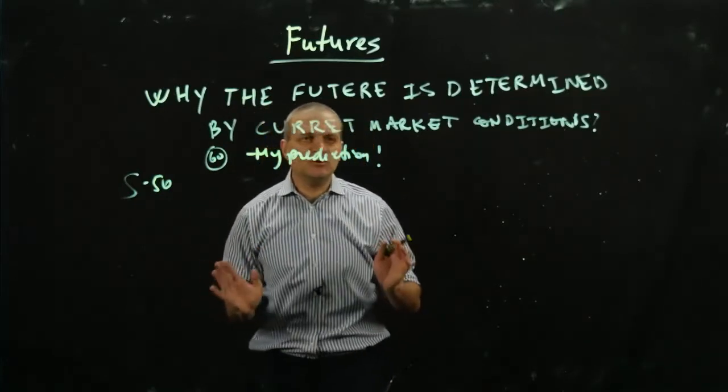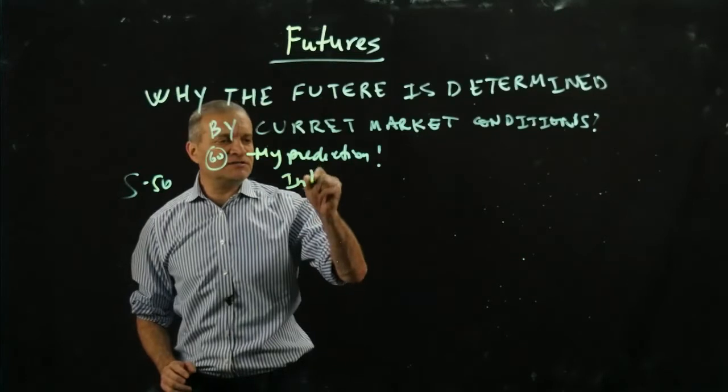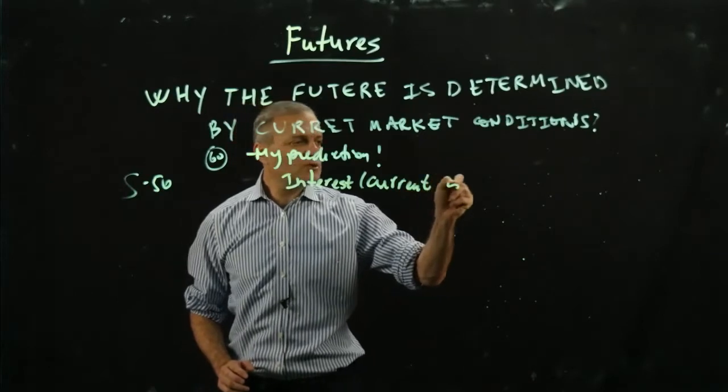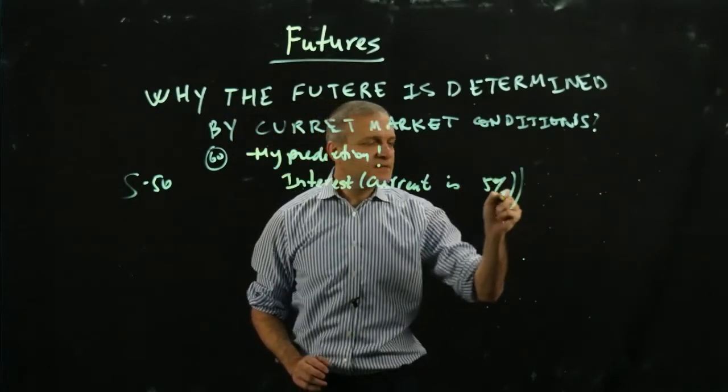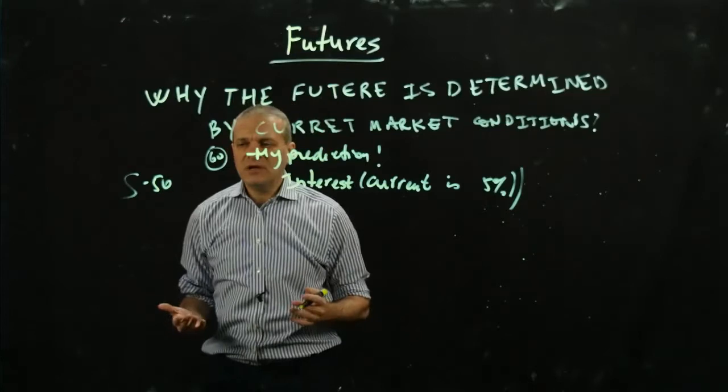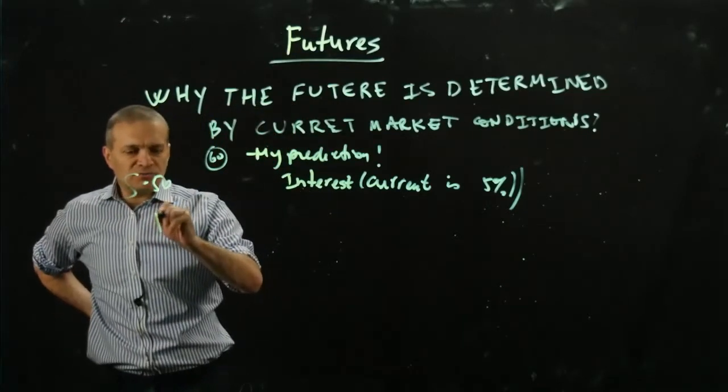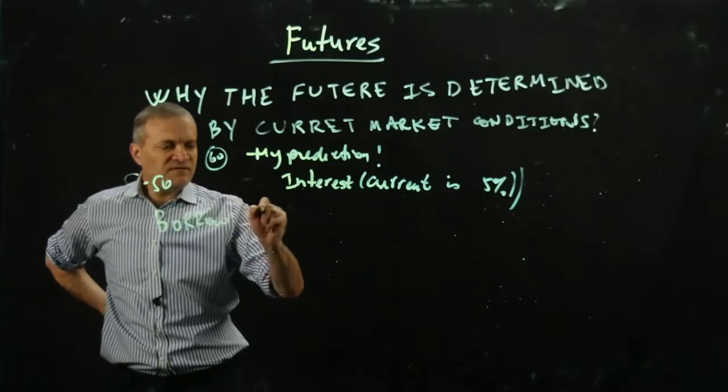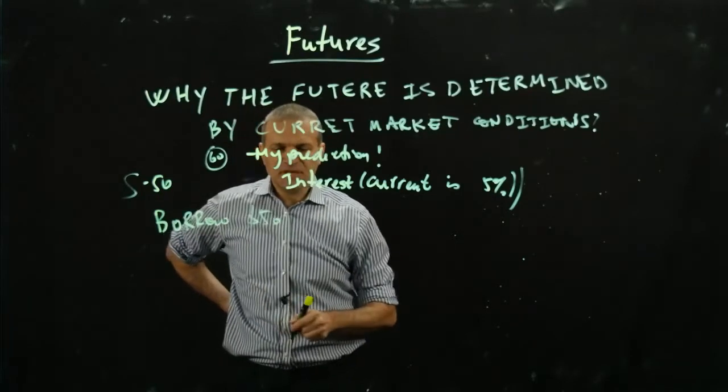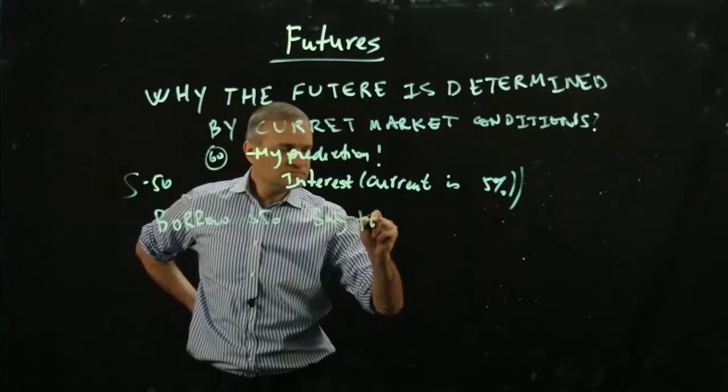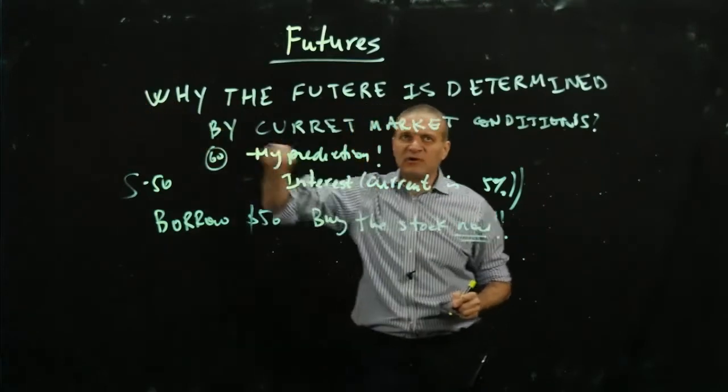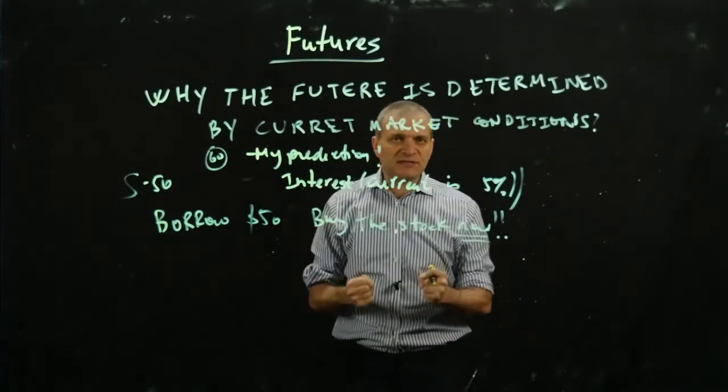So let's assume that the interest rate, the current interest rate, is let's say 5%. So what I'm going to do now, let's say that I'm entering this futures contract. So what I'm going to do now, I'm going to borrow $50. I'm going to borrow $50 and I'm going to buy the stock now. The key is now. Not a year from now. I'm going to buy the stock now. So I'm going to buy the stock. So I can buy one share because it's $50.